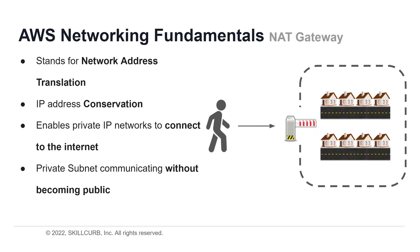Now let's explore NAT gateways. NAT stands for network address translation and is designed for IP address conversion, enabling private IP networks to connect to the internet. Think of it like an entrance gate with a watchman: a new person entering a premises won't know anything about inside members, and the watchman allows only authorized persons inside. Similarly, NAT is the entrance to your VPC — it monitors all incoming objects and allows only authorized access to internal private EC2s. A NAT gateway is highly available and allows your private subnet to communicate to the internet without becoming public.